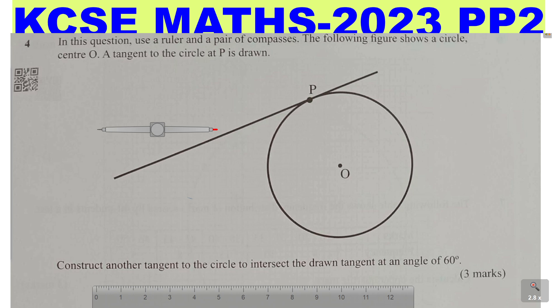Now the first thing you can do is just to draw a sketch of what is expected. So just draw a sketch. You're required to draw another tangent. I'll just sketch another tangent like that. And that tangent will intersect the other tangent at 60 degrees.